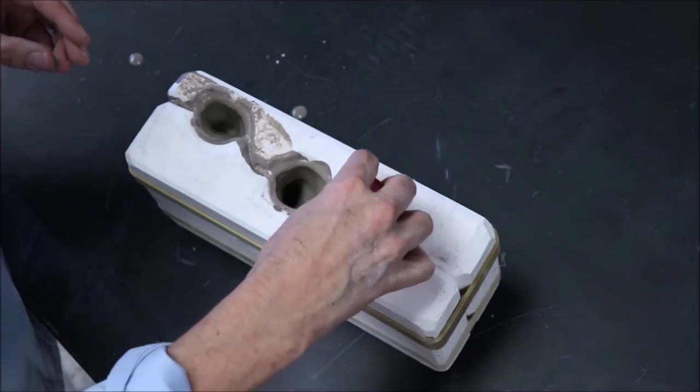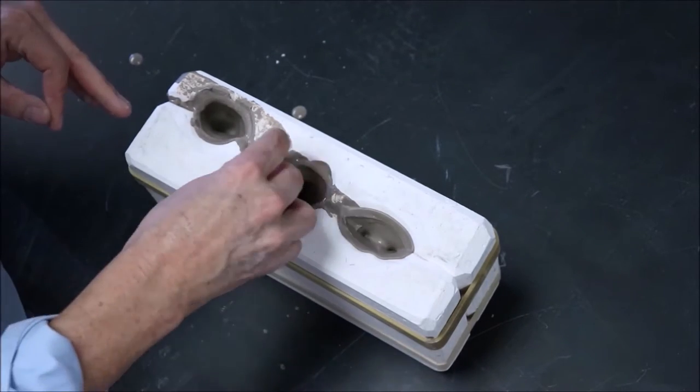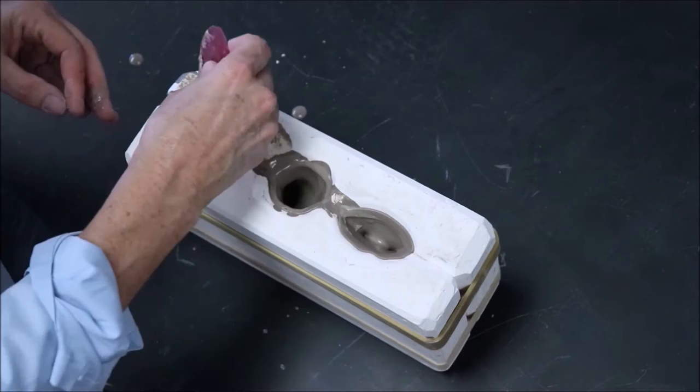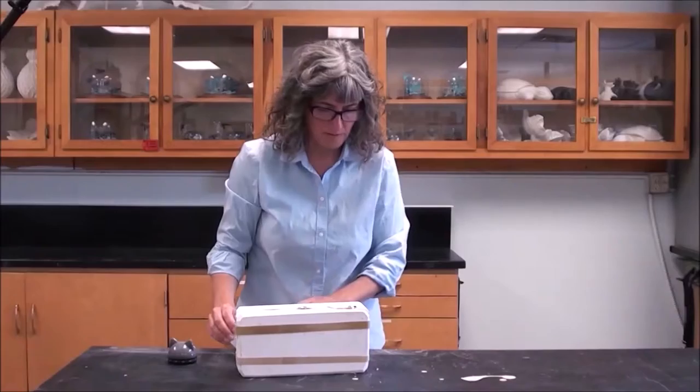This is usually because the slip on the top gets hung up on the plaster, and as it begins to shrink, it can't free itself from the plaster and then cracks. This crack can then creep all the way into your mold, so best to get rid of it.